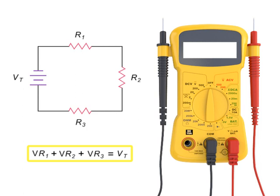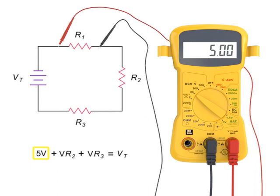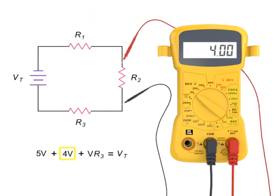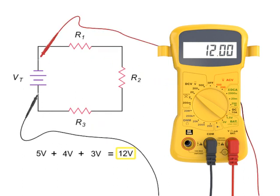By adding the voltage drop across resistors 1, 2, and 3, you can determine the total voltage applied at the source. In this case, the total voltage is 5 volts plus 4 volts plus 3 volts, or 12 volts total voltage.